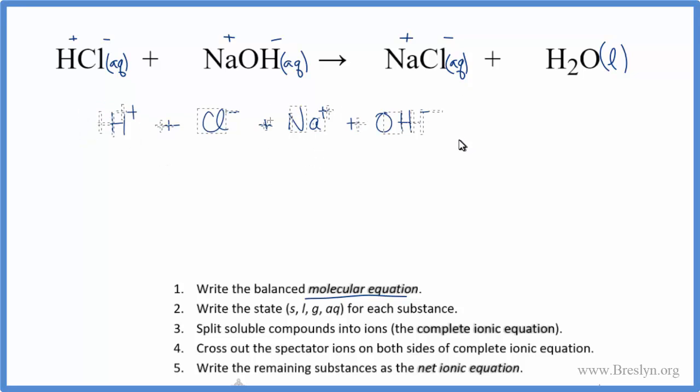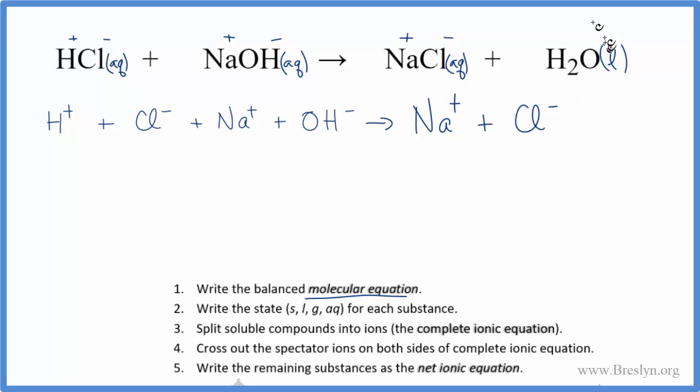These are the reactants and we've broken up these strong electrolytes. We end up with the Na plus plus the Cl minus, and then the water we said that's a liquid that stays together, so that's just going to be H2O. This is the complete ionic equation for HCl plus NaOH.